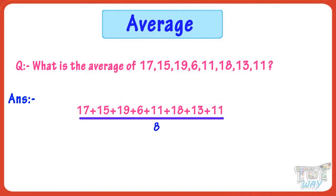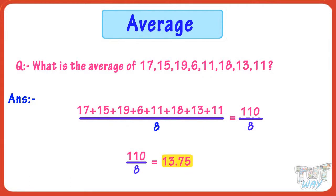The sum of numbers here is 110. 110 divided by 8, we get 13.75. So 13.75 is the average of these numbers.